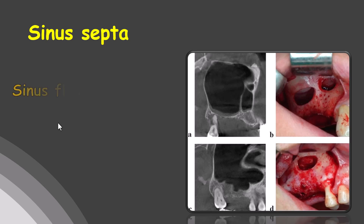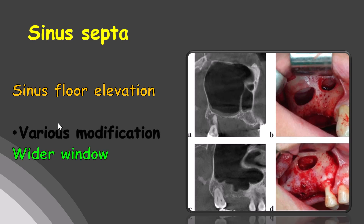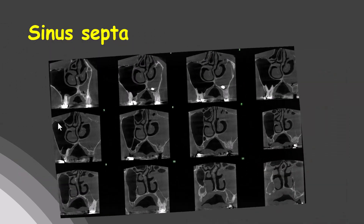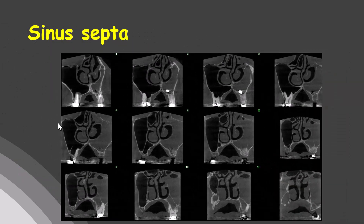Sinus floor elevation becomes complicated if sinus septa are incomplete or run longitudinally compared to a transverse orientation. Various modifications in surgical approaches have been suggested to reduce the rate of perforation in the presence of sinus septa, including preparation of a wider window during the lateral window approach, or preparation of two separate windows on each side of a septum. Proper preoperative assessment and localization of the septa are key to minimizing complications.